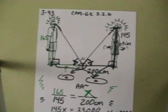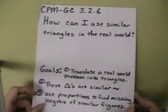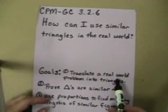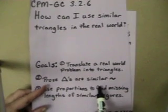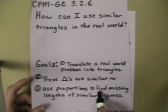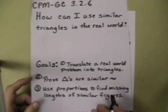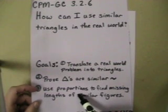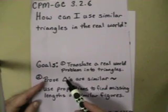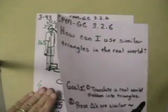We're going to revisit what we said we wanted to do today. We translated a real-world problem into a triangle, we proved that the triangles were similar, and then we used proportions to find the missing lengths of the similar figures. Remember, you can't do step three until you've proven that the triangles are similar. We don't have enough time for the other problems, but I'm going to do that in a part two. So, look for part two of this in just a few moments.